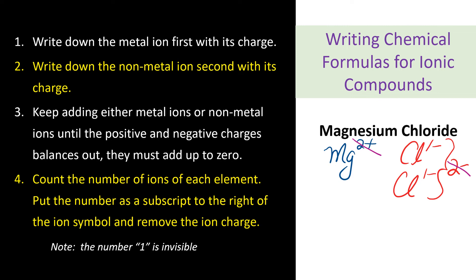Now rewrite the symbols and count the number of ions present for each element and write that number as a subscript to the right of the ion symbol. So magnesium, we only have 1 — we write 1 here. And chlorine, we have 2 — write 2 here. However, the number 1 we don't need to write down, it's invisible, so we remove that. The ionic formula for magnesium chloride is MgCl₂.